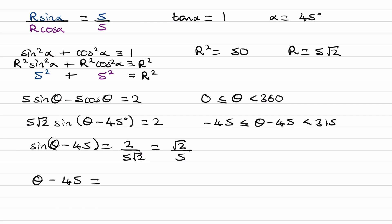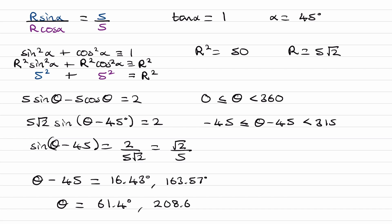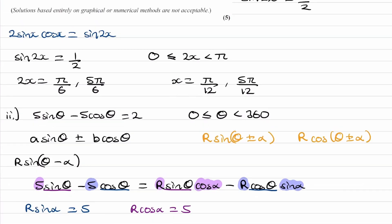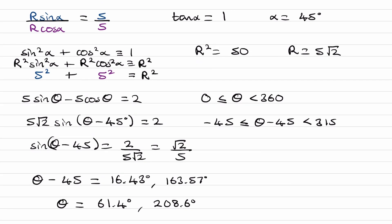Taking inverse sine of root 2 over 5 gives 16.43 degrees. Then for sine, the next angle is 180 minus 16.43, which gives 163.57 degrees. These are the only two angles in our domain — adding or subtracting 360 to either would take us outside the domain. Adding 45 back to both values, we end up with 61.4 and 208.6 degrees, to one decimal place, as our final answer.